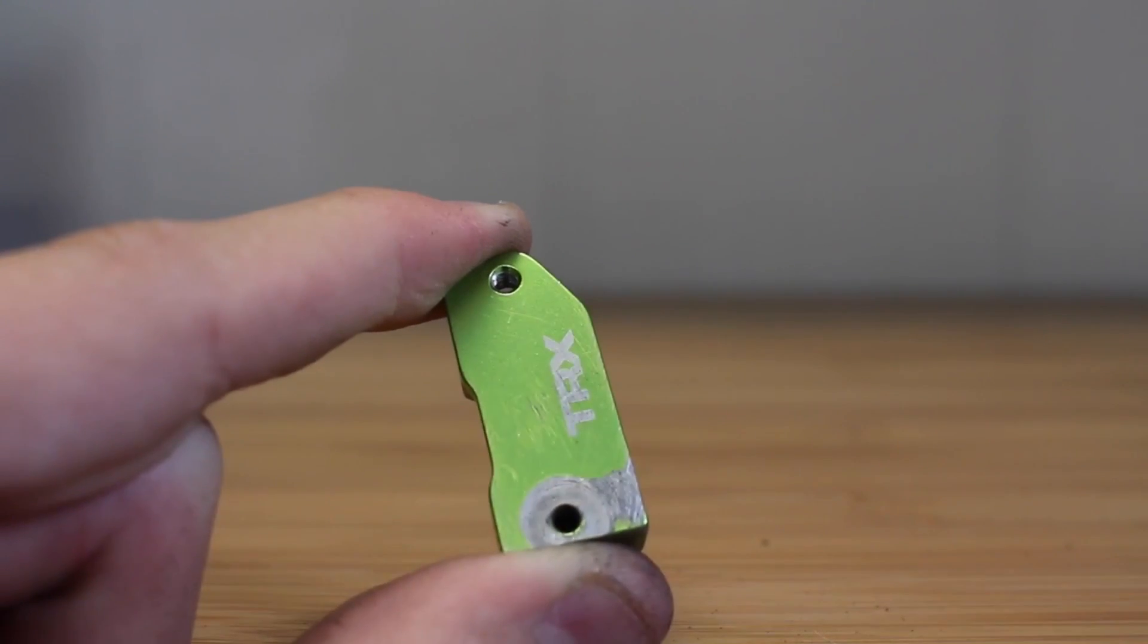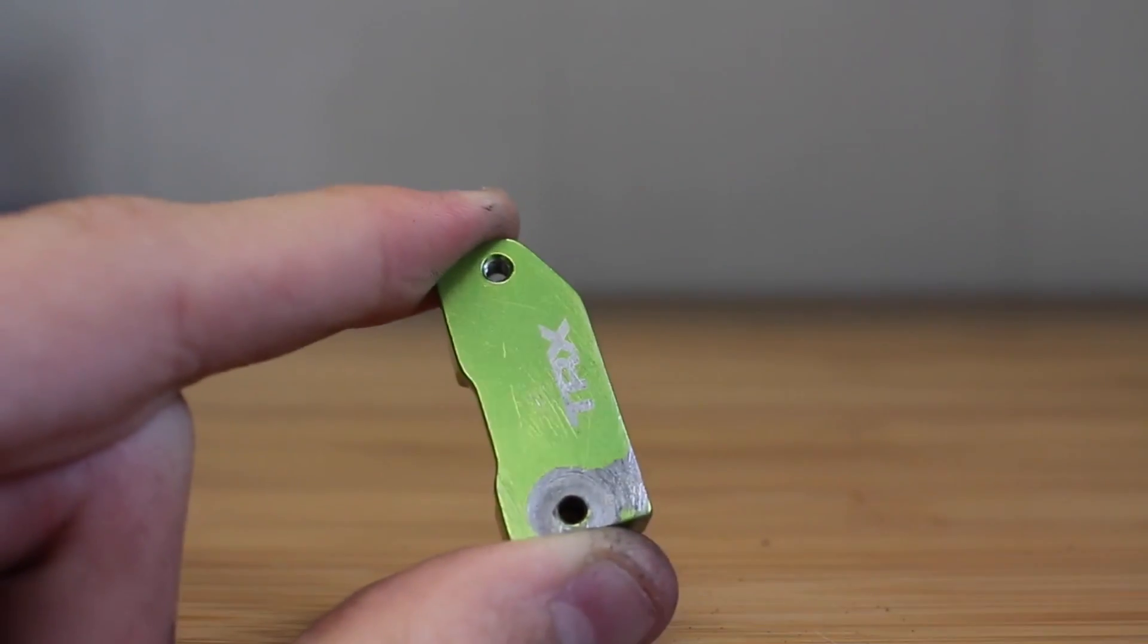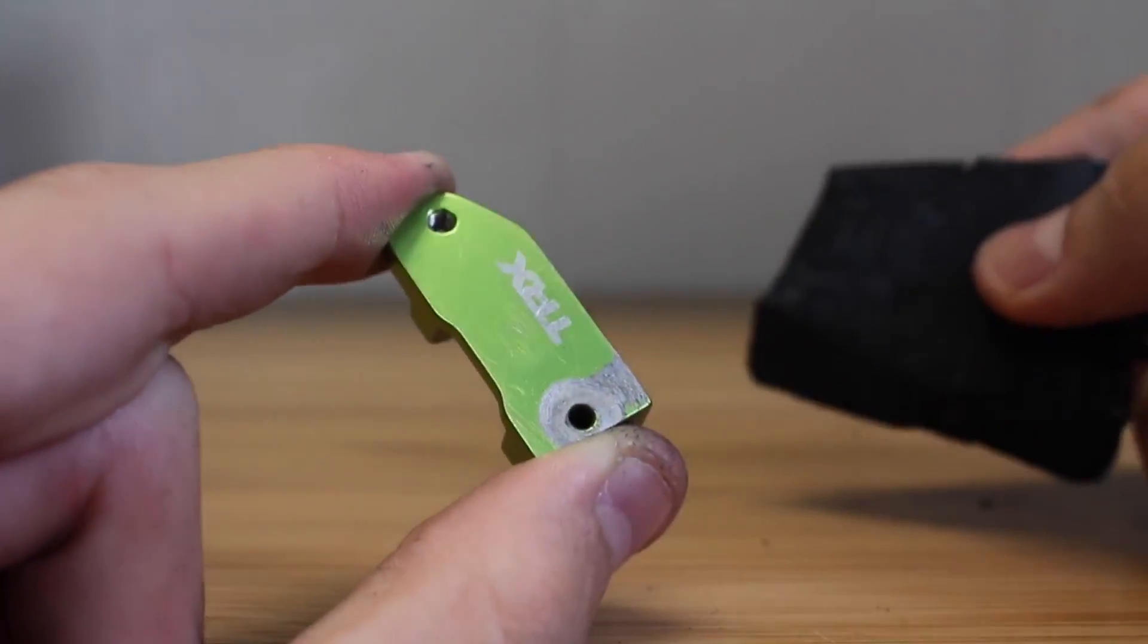The process of removing the anodizing off the aluminum is pretty simple. What you do is you take your roughest sandpaper and just start sanding the surface and just do this until you can see all the green is gone or any other color that you have left.